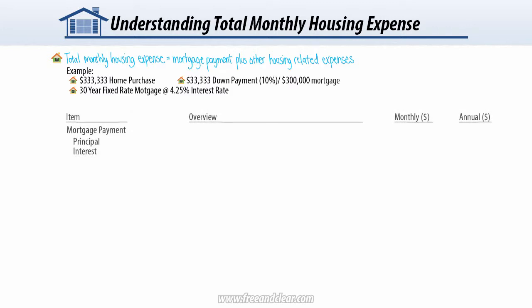First, let's start with the monthly mortgage payment, which is the largest component of total monthly housing expense. Based on our loan amount, interest rate, and mortgage term, our monthly mortgage payment in this example is approximately $1,475. If you multiply our mortgage payment by 12 months, we pay $17,700 in total mortgage payments over the course of the year.